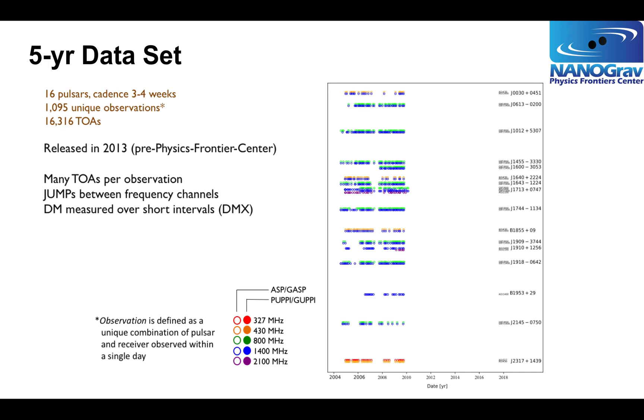The next four slides will give you a sense for those different data sets and how much our program has grown. The plots on the right show time, 2004 to the present 2017, and vertically they show the different pulsars under observation. The five-year data set has five years worth of data and 16 pulsars. The different colors represent different observing frequencies. The five-year data set consisted of 1,095 unique observations. That means a given pulsar with a given telescope receiver on a given day. And because we actually collect multiple arrival times or TOAs, each observation consisted of 16,000 TOAs.